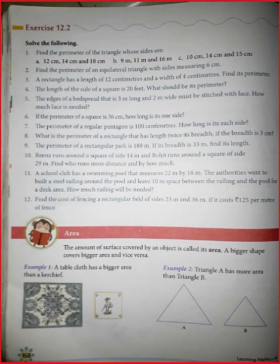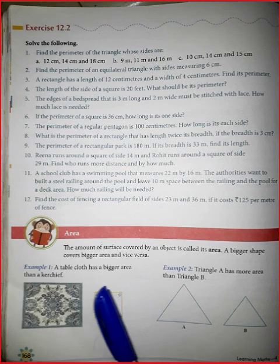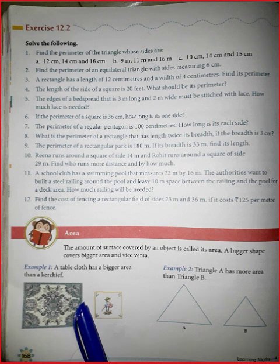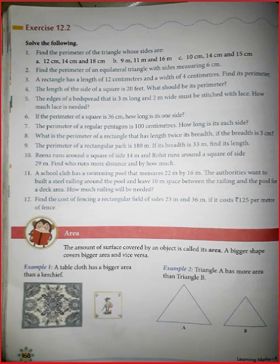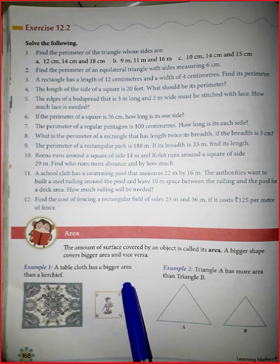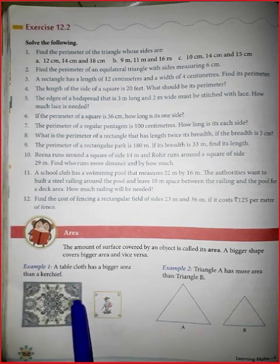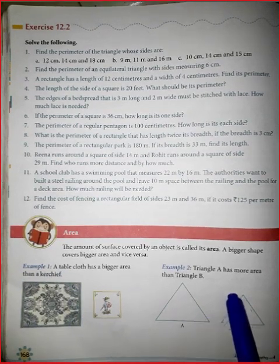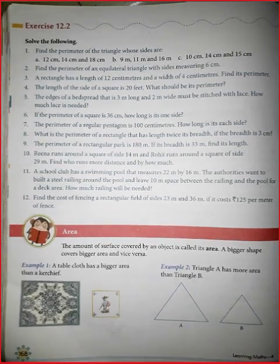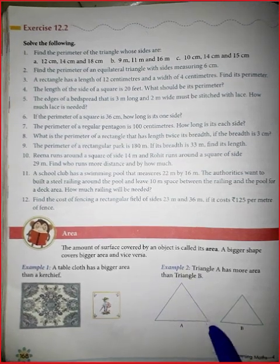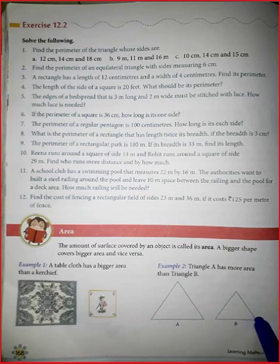A tablecloth has a bigger area than a handkerchief. You can observe here — the handkerchief will take less space and the tablecloth will take more space. Similarly, triangle A has more area than triangle B, as you can see here.